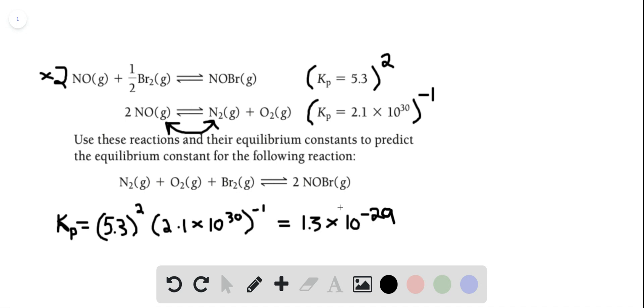So that's how you obtain the equilibrium constant for an equation given the equilibrium constants for its parts.